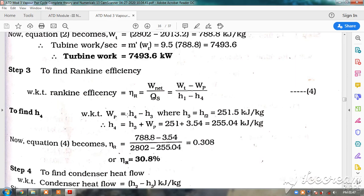If we see here, pump work is equal to h4 minus h3. h3 is directly saturated liquid, hf2, that is 251.5 kilojoules per kg. Therefore, substituting in this, we already know Wp, so h4 we will calculate is equal to h3 plus Wp.